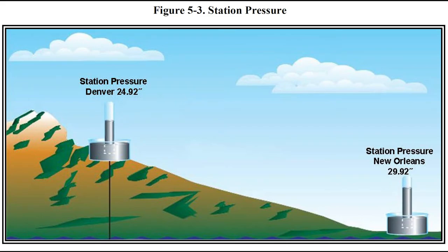Air pressure decreases as you go up in altitude. The standard air pressure at sea level is 29.92 inches of mercury on a barometer. As shown in figure 5-3, at Denver — about 5,000 feet elevation — the pressure is about 24.92 inches of mercury, a decrease of roughly one inch of mercury per thousand feet of altitude. That's why when we set our altimeters, we receive an altimeter setting somewhere around 29.92, plus or minus a bit, typically ranging from about 28 to 31 inches.